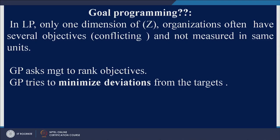In goal programming, management will give different priorities to different goals. For example, profit is to be earned a certain amount, but at the same time we want a certain number of units of product x1 or x2. You can have 3 goals and management will give priorities to these goals. In GP, the objective is always to minimize deviation from the target — whatever the target, we always try to minimize the deviation.